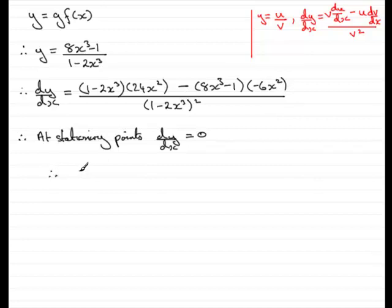So we'll put that in. Now, let's clean this top up as well. Let's just put the 24x squared at the front of the bracket, 1 minus 2x cubed. And we can see that minus minus here gives us a plus. So we've got plus 6x squared, multiplied by 8x cubed minus 1. And that equals 0.